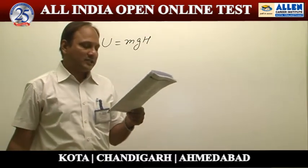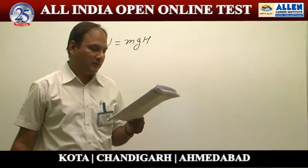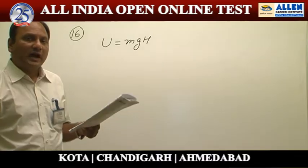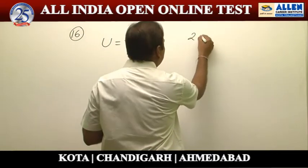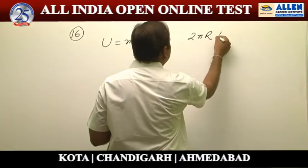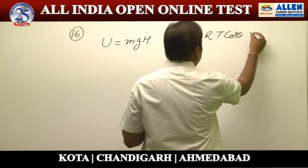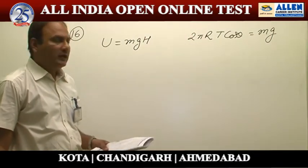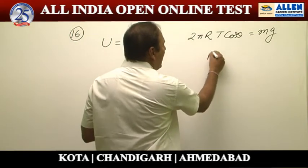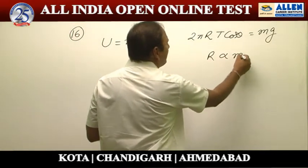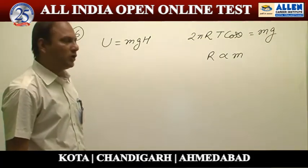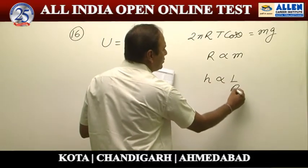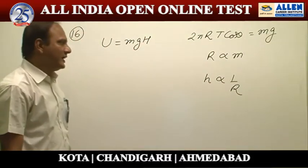The question asks: if the radius of the tube is doubled, what happens to the potential energy? The upward pulling force in the capillary tube is 2πrT cosθ. When this equals the weight of the liquid rise, maximum height is attained. From this equation, r is proportional to m, so if radius is doubled, mass also doubles.